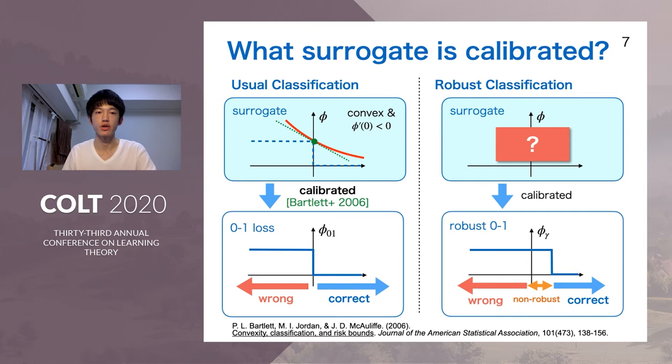Our research question is: in robust classification, we want to minimize robust zero-one loss instead of zero-one loss. So we ask: what kind of surrogate loss function is calibrated to robust zero-one loss?